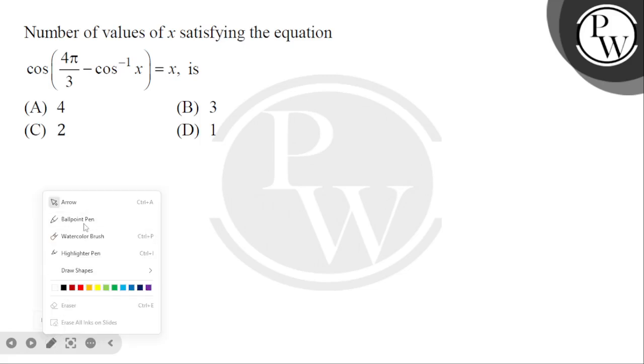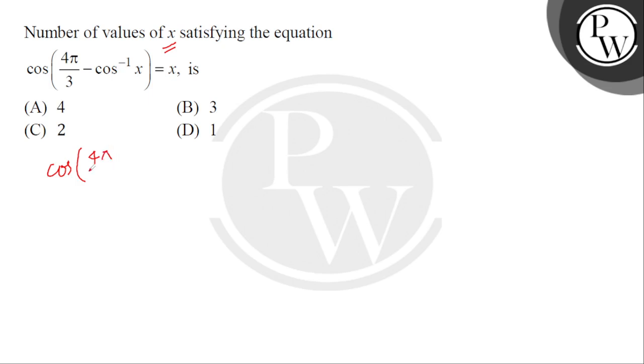Hello students, let's see this question. Find the number of values of x satisfying the equation cos(4π/3 - cos^(-1)x) = x. The given equation is cos(4π/3) - cos^(-1)x = x.